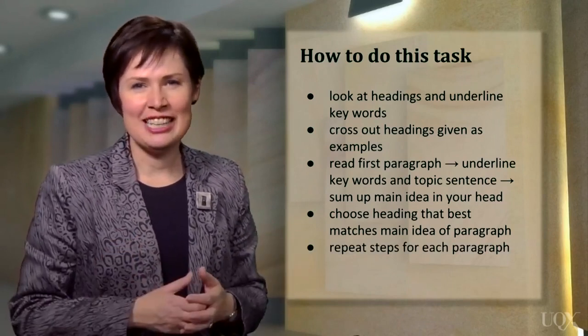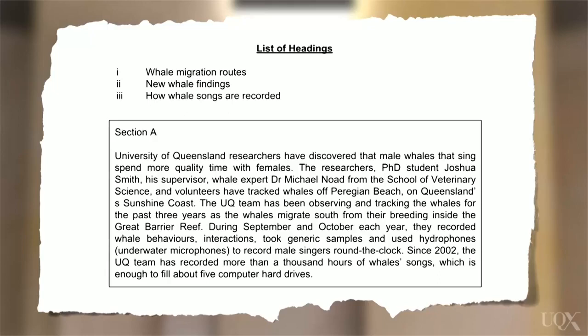Let's take a look at another example. Spend about 30 seconds reading the text. In particular, focus on the topic sentence and key words throughout the paragraph. In this example, you have three possible headings — all of them look possible. However, option 1 is not the answer because, although whale migration routes is mentioned in the text, this is not the main idea.